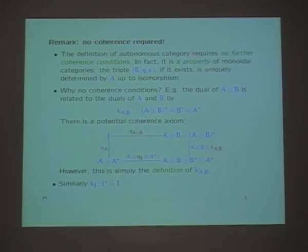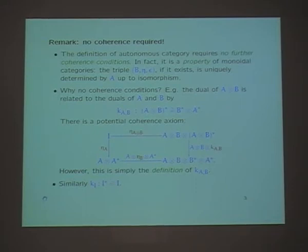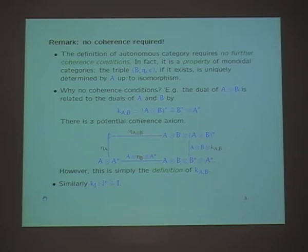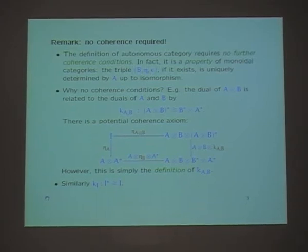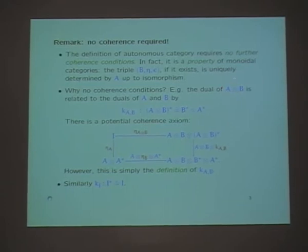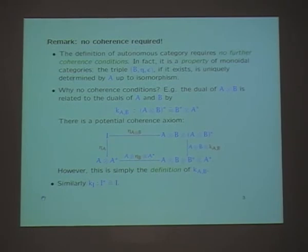Autonomous means it has a right and left dual. One really remarkable thing about this definition of autonomous category is that it requires absolutely no coherence conditions. Unlike, say, the definition of other categories — you just have the epsilon and the eta with the two equations and that's it. You might wonder why there is no coherence condition. Well, you might expect there to be a coherence diagram somehow relating the dual of A tensor B to the dual of A and the dual of B. And in fact there is an isomorphism between A tensor B — the dual of A tensor B is the same as the dual of B tensor the dual of A.